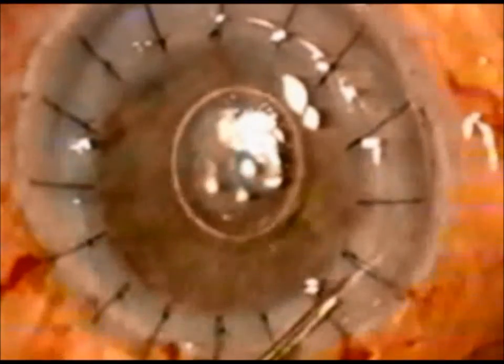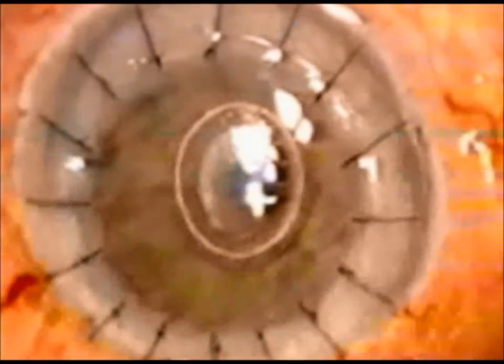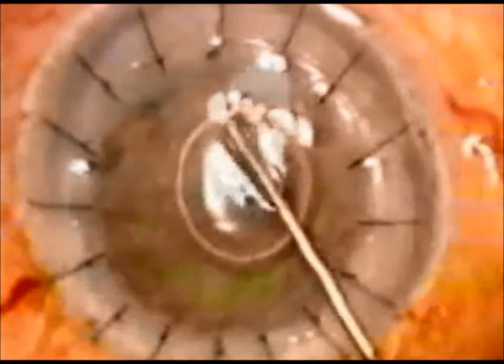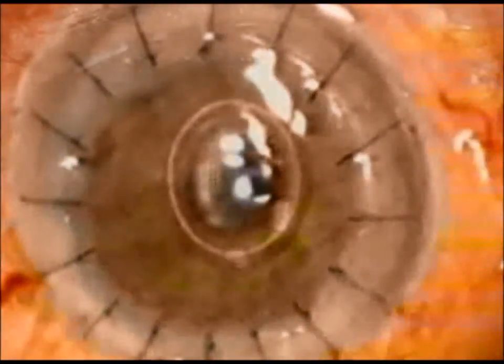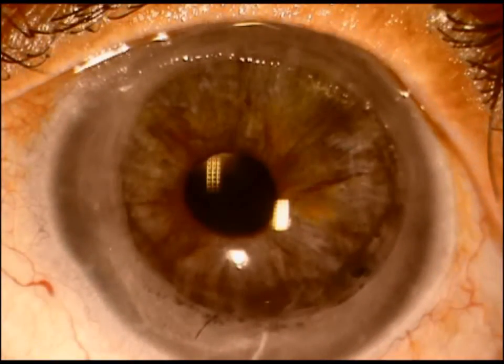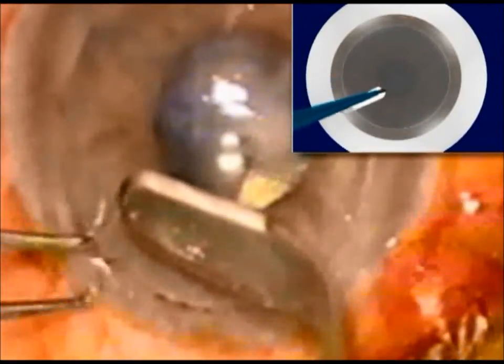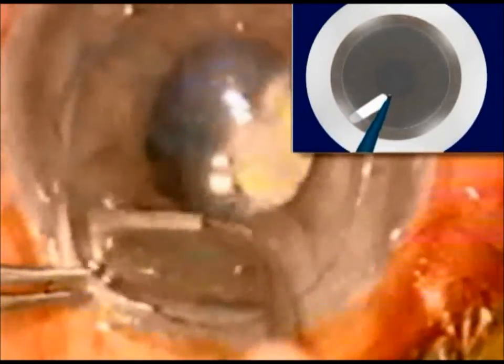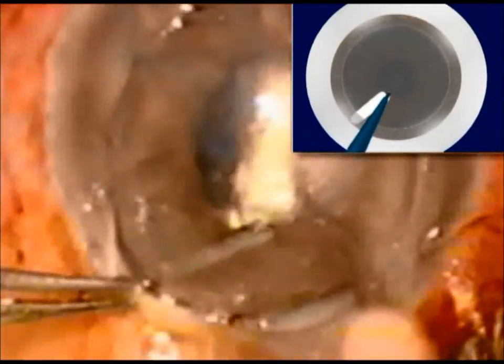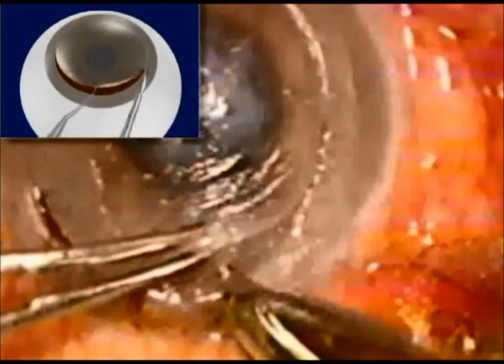Sixteen interrupted sutures are placed to secure the graft to the host. With this peripheral intrastromal tuck, sutures can be removed as early as three months after surgery. With this technique, we are able to combine the benefits of a lamellar surgical procedure with those of a full-thickness keratoplasty.